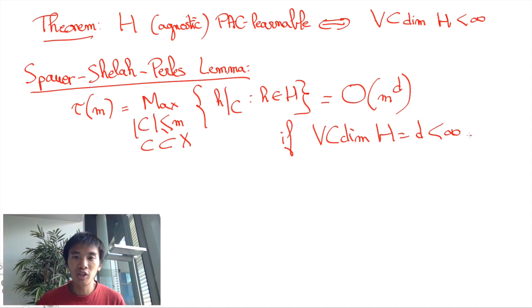Indeed, if the VC dimension was infinite, then we'd expect the growth to be 2 to the power M in the worst case, as there would always be subsets of size M that are shattered by H. However, when the VC dimension is finite, when subsets C are much larger than the VC dimension, the number of ways our hypotheses behave on C suddenly drops to being polynomial on the size of C.